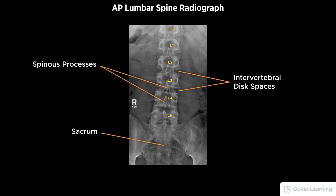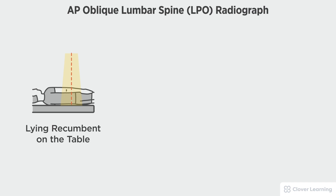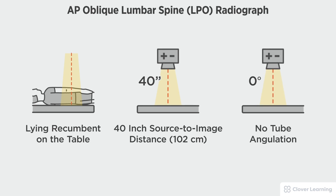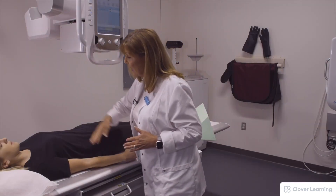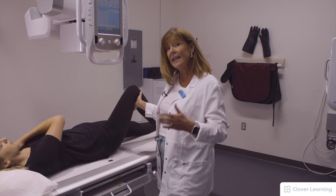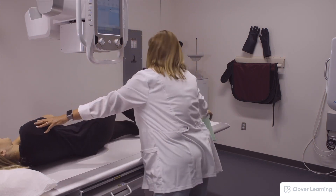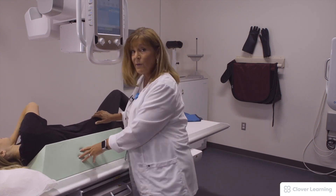In this view we will be demonstrating the AP lumbar spine left posterior oblique. The LPO view should be performed with the patient lying on the table with a 40 inch source to image distance and no tube angulation. I'm going to have the patient bend this knee and control movement by the shoulder and hip, rolling her up uniformly, and use an angle sponge to immobilize at 45 degrees.